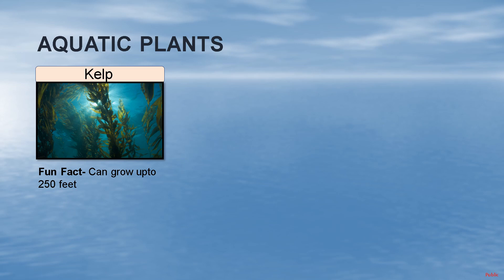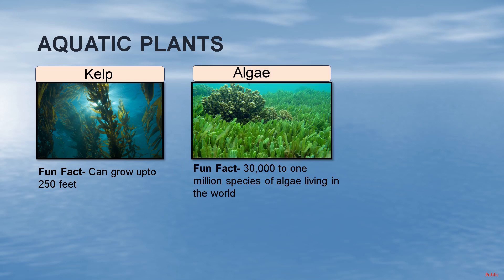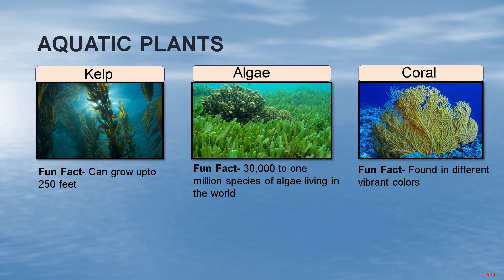Right now we can see kelp. The fun fact for it is they can grow up to 250 feet — so tall, can you imagine! The next one is algae. The fun fact for them is there are like 30,000 to 1 million species of them living in the world. Next is coral. The fun fact is they are found in very different vibrant colors. And beyond them there are so many more species.